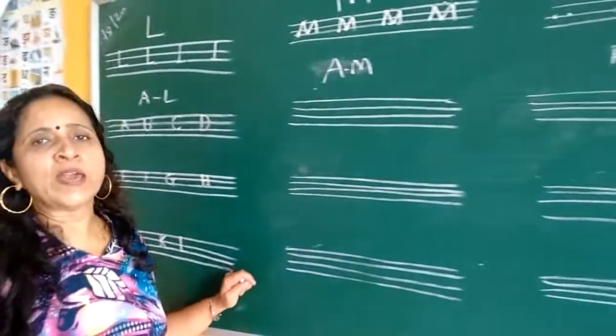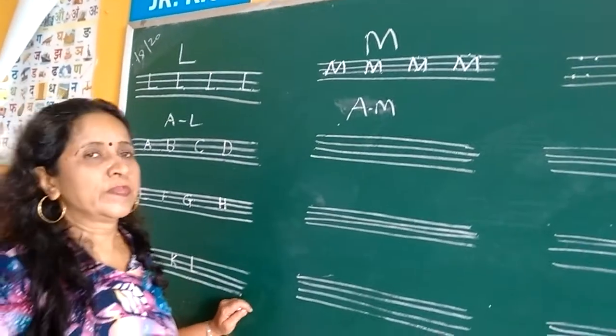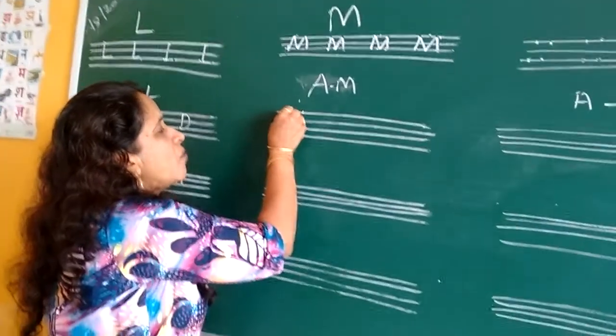M for mango, M for monkey. Now A to M. How you will write A?